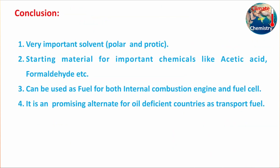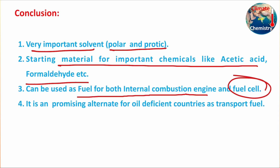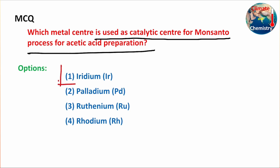In conclusion, methanol is a very important polar protic solvent and can be used as a starting material for important chemicals like acetic acid and formaldehyde. It can be used as a fuel in both internal combustion engines and fuel cells, and is a promising alternative transport fuel for oil-deficit countries. India should focus on this fuel to reduce its import dependency on fossil fuels and save foreign reserves. Regarding the MCQ: the metal center used in the Monsanto process for acetic acid generation is iridium — a very costly and versatile metal.